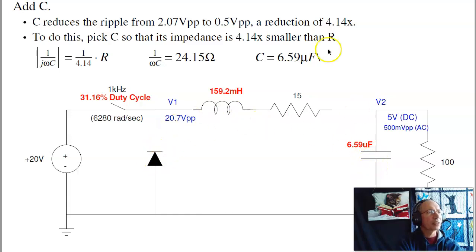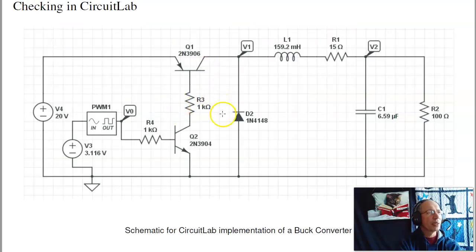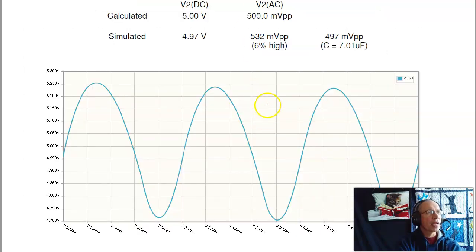I can then check it in CircuitLab, build the circuit, change the duty cycle to 31 percent, change the inductor, change the capacitor, and what I get is almost correct. The DC voltage is almost spot-on. The AC voltage is a little bit too high on the ripple. We'll see why that is in our next lecture on Fourier transforms, but for now I can just see that, well, I made some approximations. I wound it being 6 percent too high. A fix is just make the capacitor 6 percent bigger. That will actually drop the ripple down to what I want, 497 mV peak-to-peak.